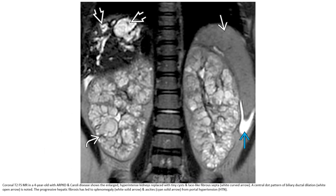A T2 FS MRI of a 4-year-old with autosomal recessive polycystic kidney disease and Caroli disease shows large hyperintense kidneys replaced with cysts, and a large liver with fibrous septa. The central dot pattern of biliary duct dilatation is noted. Progressive hepatic fibrosis has led to splenomegaly and ascites from portal hypertension.